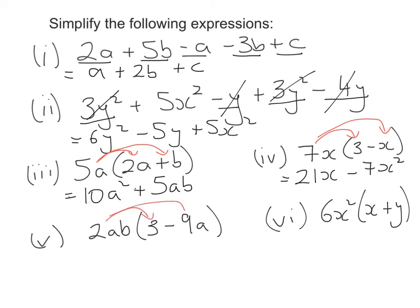For the next one, multiplying everything inside the bracket gives me 6ab. Make sure to write down your minus again: 2 times 9 gives me 18, and a times a gives me a squared, and then b. So just be really careful with that question — the answer is minus 18a squared b.